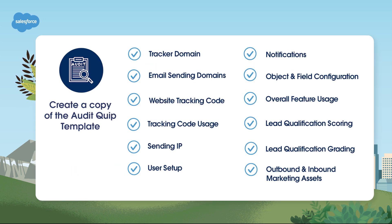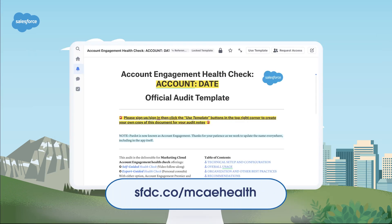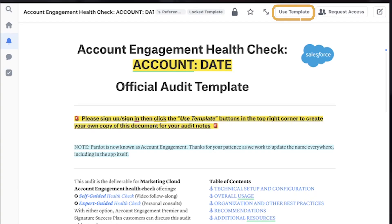To begin the audit process, it's essential to use a structured approach. We recommend creating a copy of our audit template to organize your notes and share with your colleagues or Salesforce once complete. To create your own audit Quip, click the link in the video description to open the template, then sign in or sign up to Quip, and click the Use Template button in the top right corner to create your own copy.